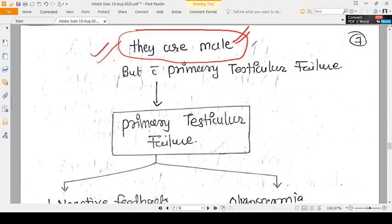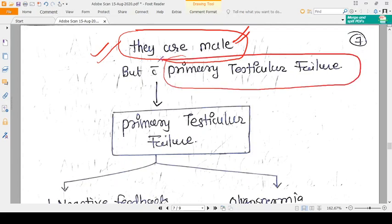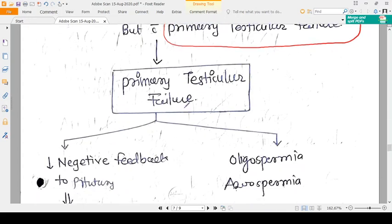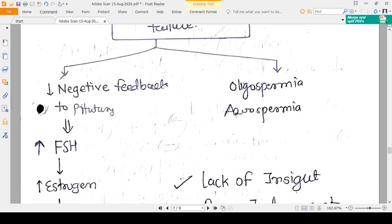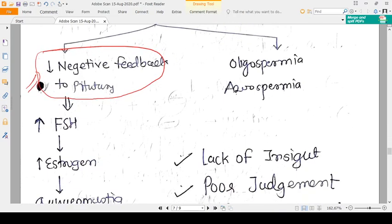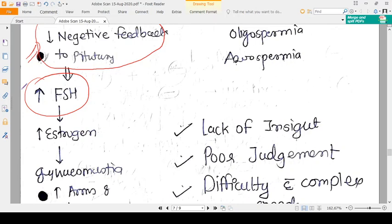But this male is having primary testicular failure. When we talk about testicular failure, that means there is a problem in the testis. With this primary testicular failure, it cannot produce enough hormones like testosterone and estrogens. There will be negative feedback to the pituitary decreased, and that's why there's an increase in FSH. The FSH is increased, and it will go and increase the production of estrogen.